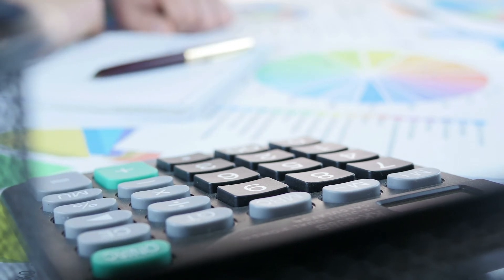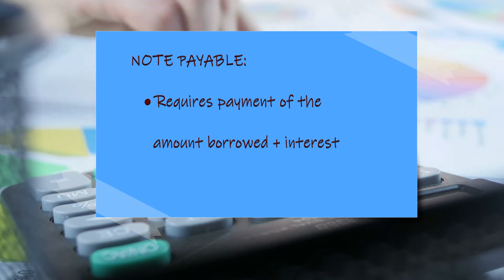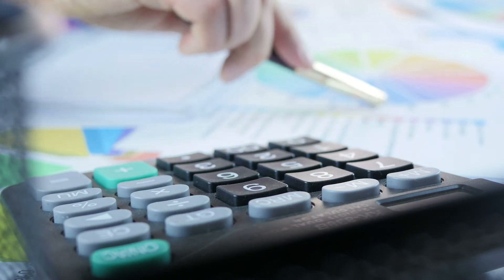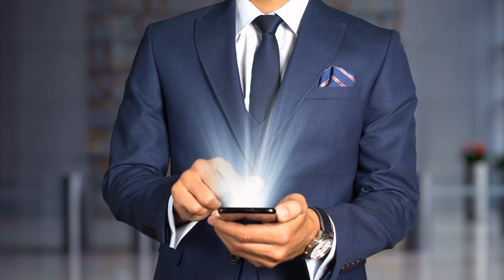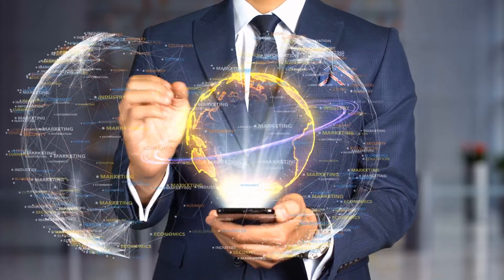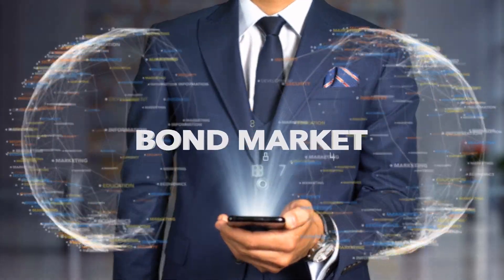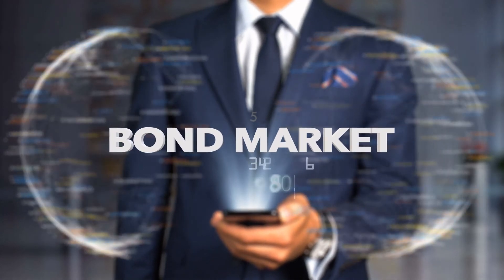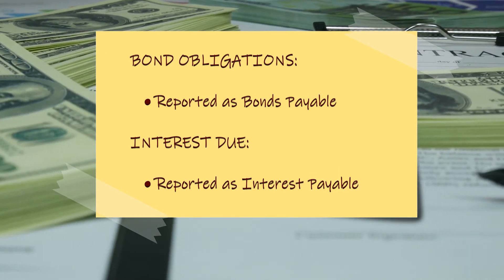Many companies borrow by issuing notes payable. A note payable is an agreement that requires payment of the amount borrowed plus interest. Notes payable may be issued on a short-term or long-term basis. The company may also borrow money by issuing bonds. Bonds are sold to investors and require payment of interest. The amount of the bonds is called the face value, and it usually requires repayment several years in the future — that is why bonds are a form of long-term financing. The interest on the bonds is usually paid every six months. Bond obligations are reported as bonds payable and any interest that is due is reported as interest payable.